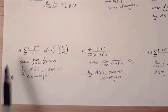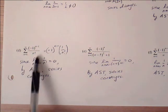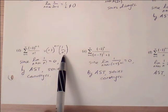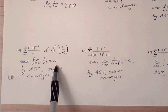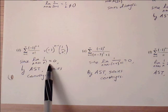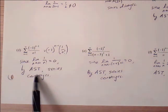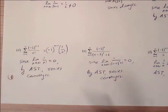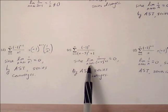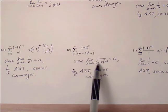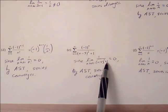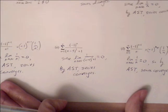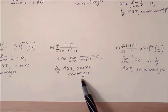For example d, the alternator is (-1)^(n-1) and a_n = 1/(n!). Since 1/(n!) goes to 0, the first condition passes, and by the alternating series test the series converges. For example e, a_n = 1/((n-5)^2 + 1). We know this goes to 0, so by the alternating series test the series converges as well.